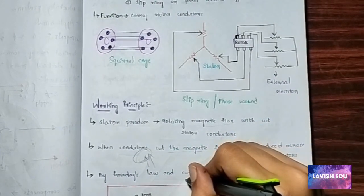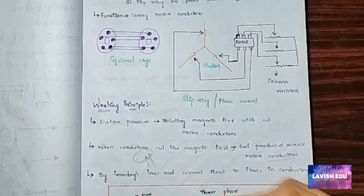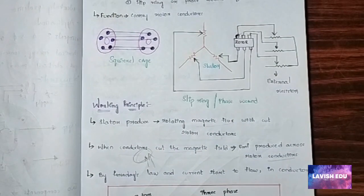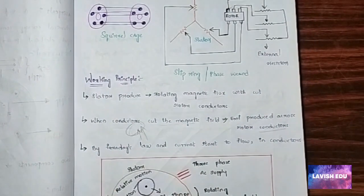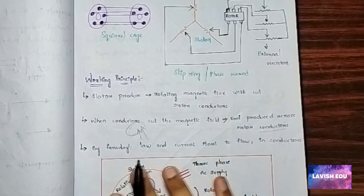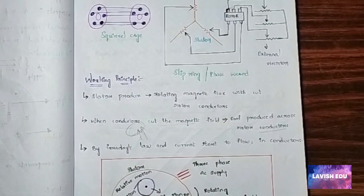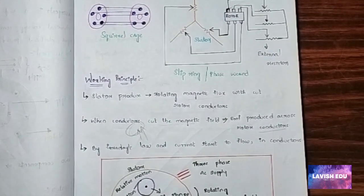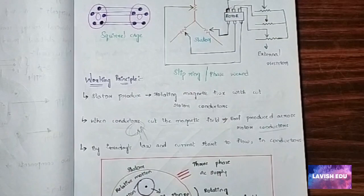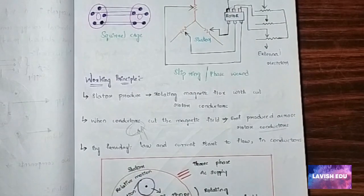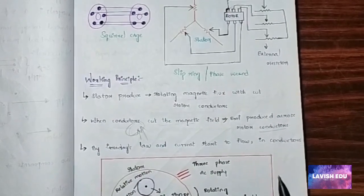By Faraday's law, as the EMF is generated, current starts to flow in the conductors. This is a simple notation of the three-phase induction motor showing the direction of the current. Watch and note this as I explain — this is the proper way to answer this question in an examination.